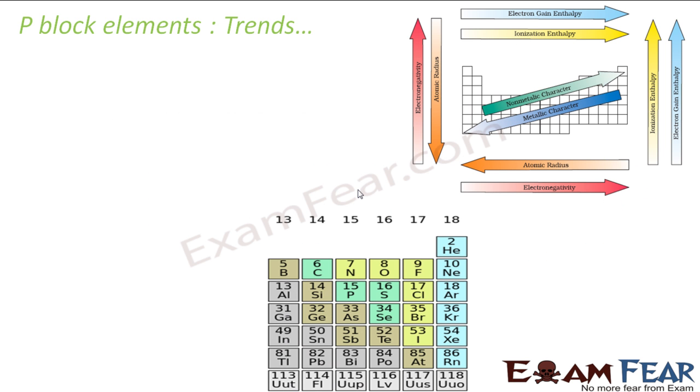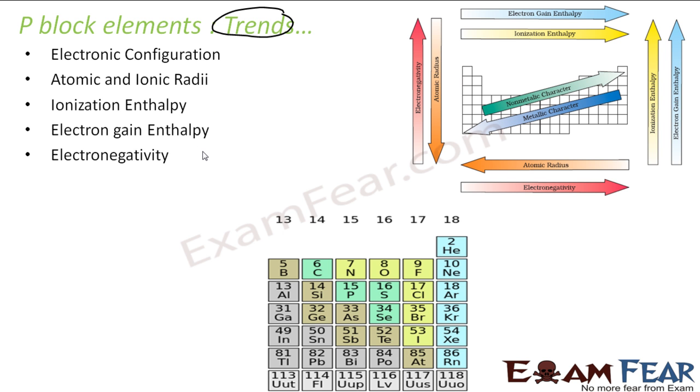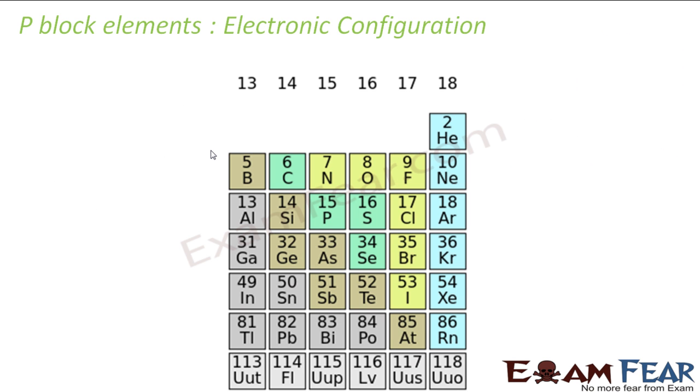So let's see the trends for P-Block specific. We'll talk about electronic configuration, atomic ionic radius, ionization enthalpy, electron gain enthalpy, electronegativity, metallic character, oxidation states. We'll discuss about all these things in detail.